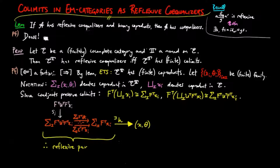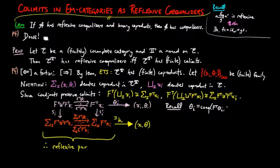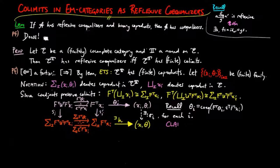Recall that the T-actions θ_I are the co-equalizers of F_T θ_I and ε_{F_T X_I}. Then, since the inclusion morphisms S_I and S_I' make the square on the left commute sequentially, by the universal mapping property of X_I for each I, there exists a unique morphism Σ_I from (X_I, θ_I) to (X, θ). We claim that this co-cone formed by the Σ_I is the co-product we are after.